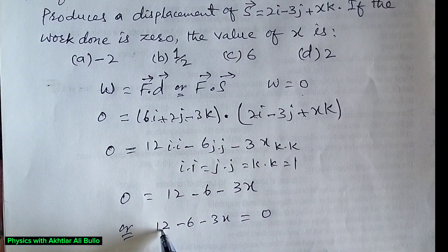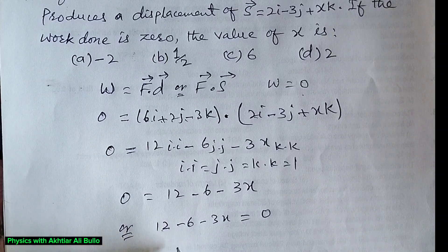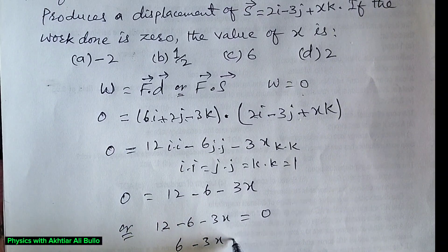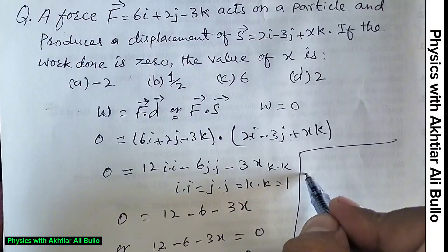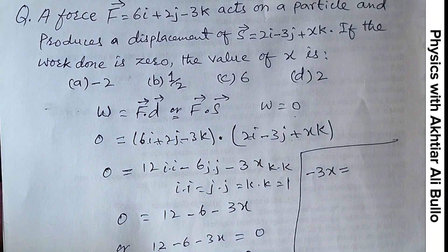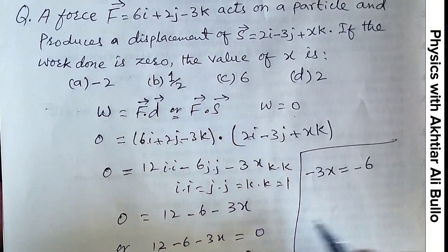So, plus 12 minus 6 will be plus 6. So minus 3X is equal to minus 6.